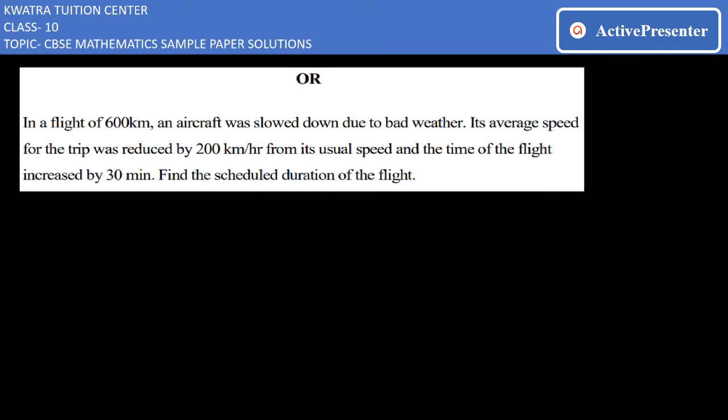Let's start with the next one. We have the OR part of question 32. It says in a flight of 600 km an aircraft was slowed due to bad weather. Its average speed for the trip was reduced by 200 km per hour from its usual speed and the time of the flight increased by 30 minutes. Find the scheduled duration of the flight.